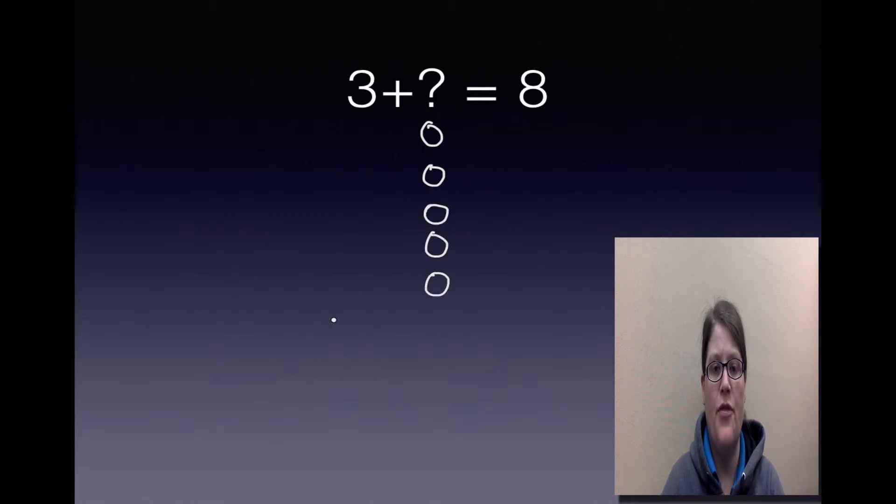And then we know that 3 plus... let's count this up: 1, 2, 3, 4, 5, equals 8. What was the missing addend? That's right, it was 5. 3 + 5 = 8.